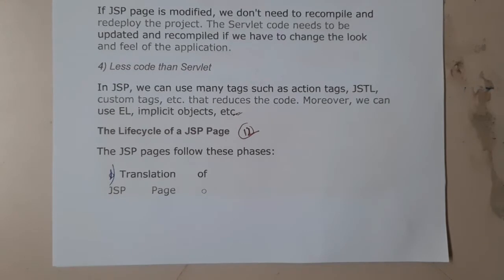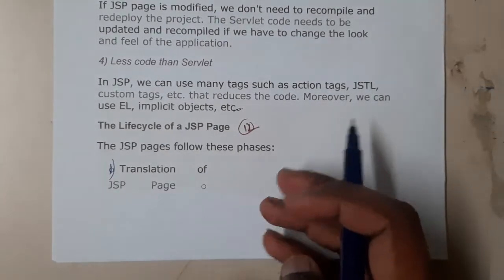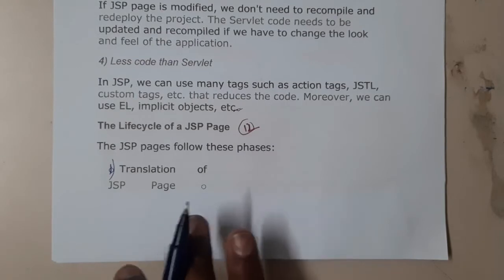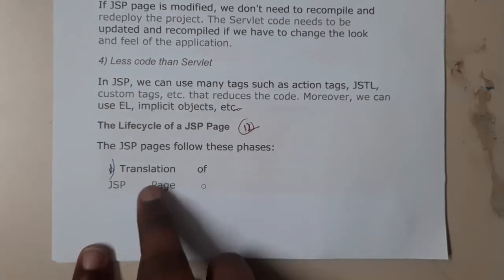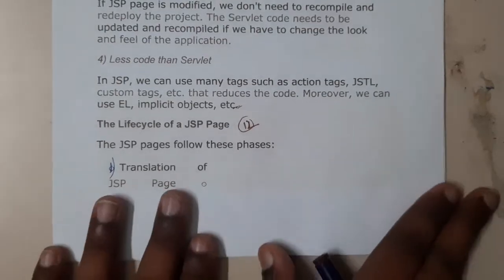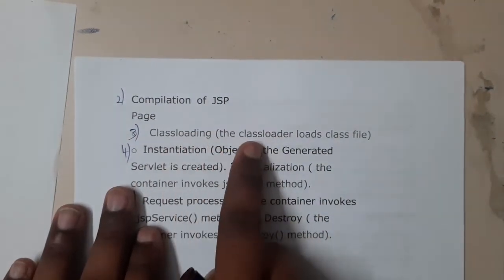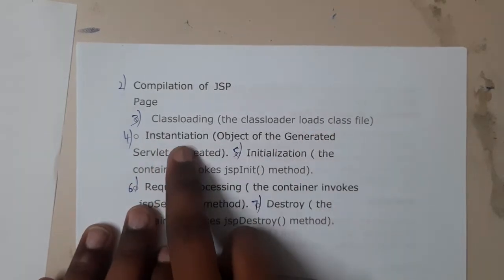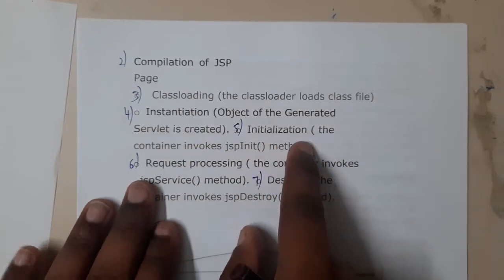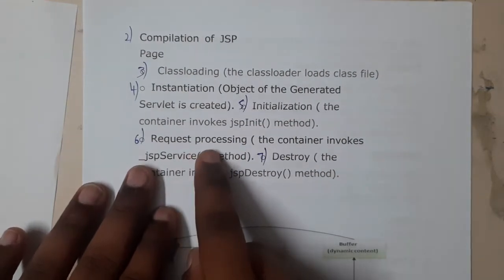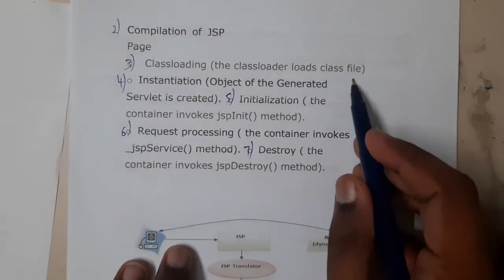So let us now go through the phases in which the life cycle of JSP is done. The first step is translation of the JSP page — the JSP page is internally converted into a servlet page only. Even if you write code for Java Server Pages, it will be converted into a servlet page. After that: compilation of JSP, then class loading (the class loader loads class files), then instantiation (object of the generated servlet is created), then initialization, then request processing which is the service method, and finally destroying it.